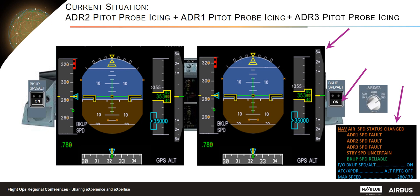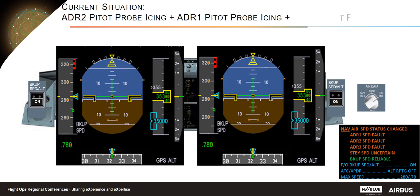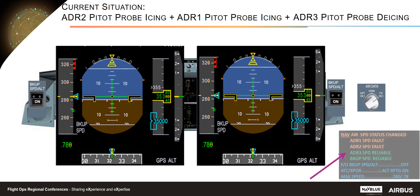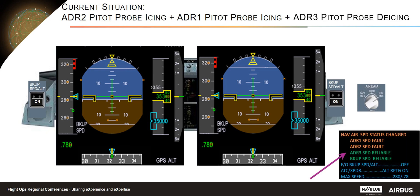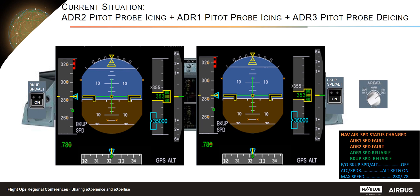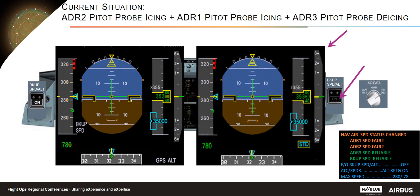With three ADR speeds faulty but the backup speed reliable, note that you can set the transponder altitude reporting to off to avoid use of erroneous ADR data by the transponder, TCAS, or EGPWS. When the frozen pitot probe de-ices, ADR3 speed becomes available again. Since backup speed is reliable, ADR3 speed can be consolidated and checked for consistency with the digital backup speed, so ADR3 speed is declared reliable again. Accordingly, ECAM requests setting the backup speed altitude push button to off, and PFD2 recovers ADR data.